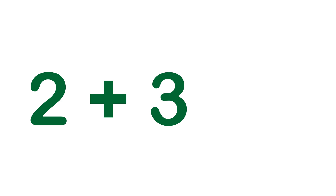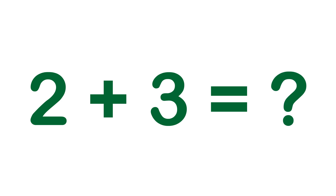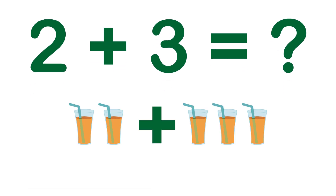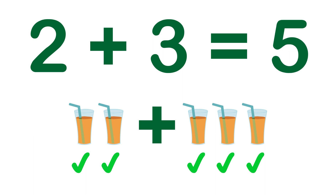2 plus 3 equals to what? 1, 2, 3, 4, 5. 2 plus 3 equals to 5.